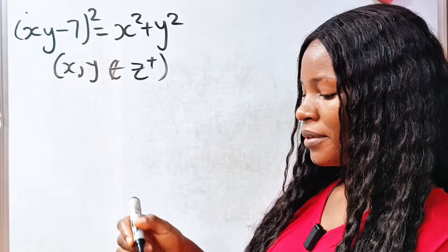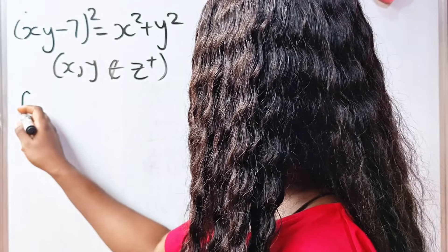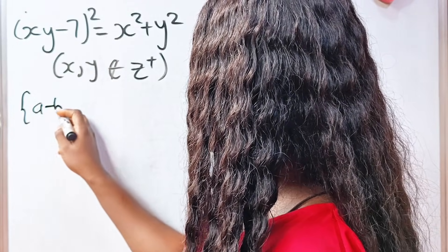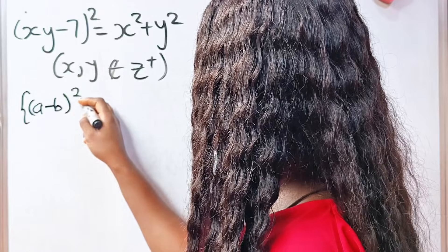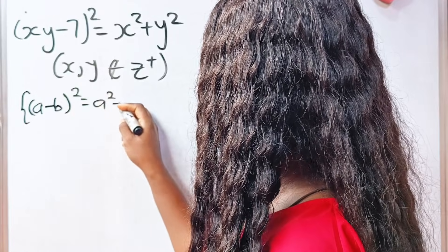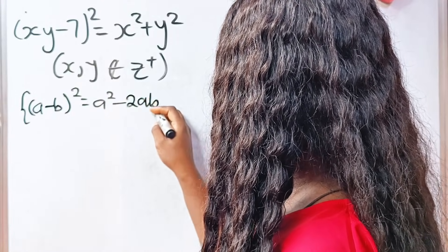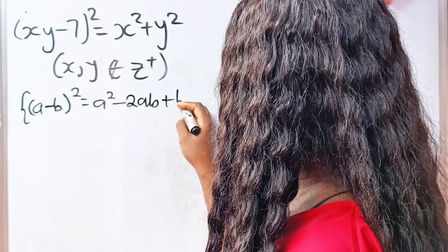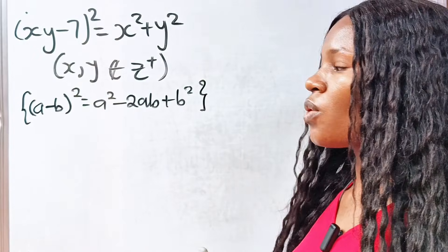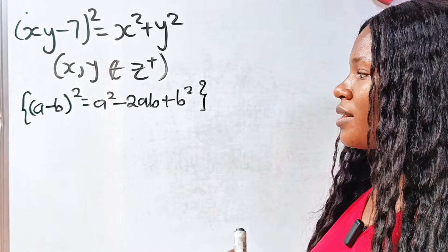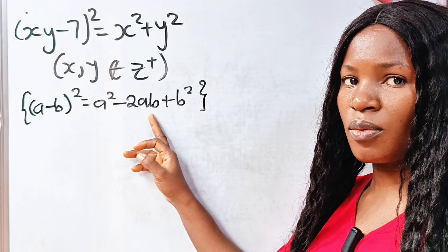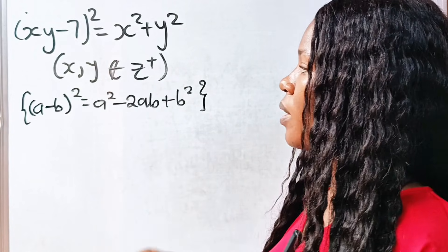First of all, remember that (a - b)² is equal to a² - 2ab + b². So looking at this, we are going to expand this expression in this form.